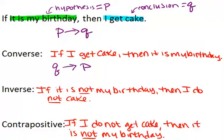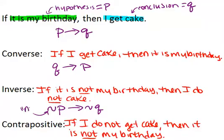For the inverse, we didn't switch the order, but we did make each part negative. The symbol for negation is a little squiggle like this. So the inverse would be: not P implies not Q, and we read that little squiggle as 'not.' The contrapositive was the combination of both, so it's just going to be: not Q, then not P.